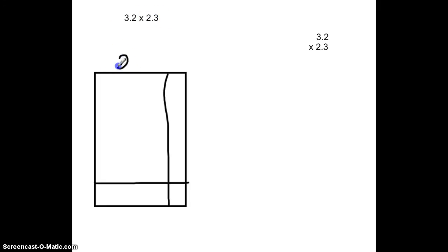Then we could say that this length is 2 and this length is smaller. So we're going to call it 0.3. We have 3.2. So we're going to say this length is 3 and this length here is 0.2.